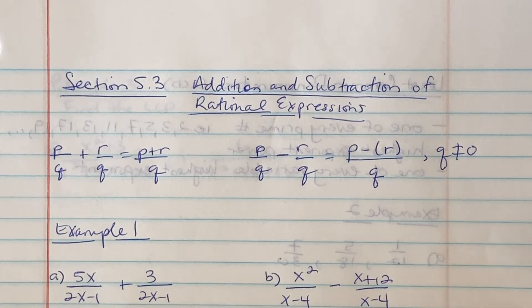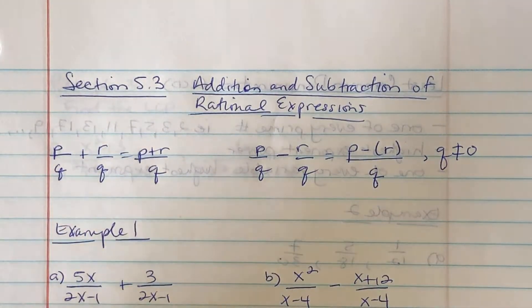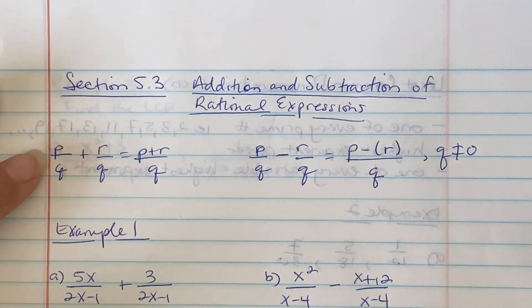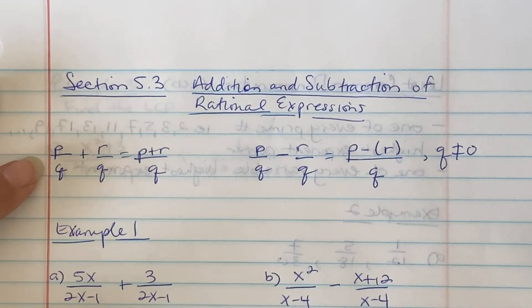Hi everyone, this is section 5.3: addition and subtraction of rational expressions. A rational expression, remember from 5.1, is a polynomial over a polynomial.